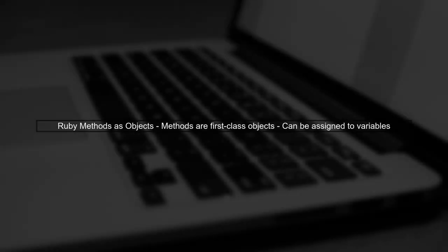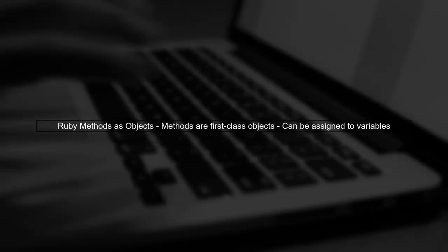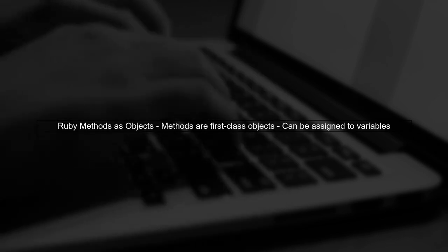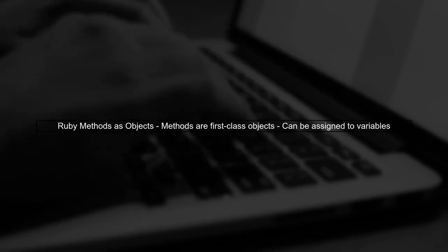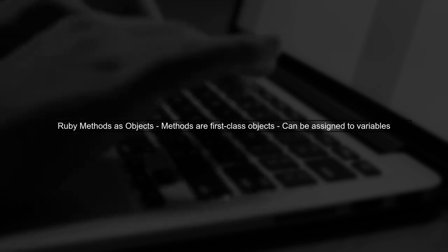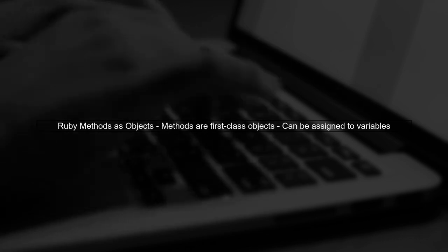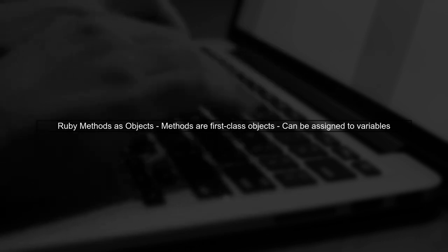Regarding your second question, in Ruby, methods are indeed objects. This means they can be passed around like any other object.